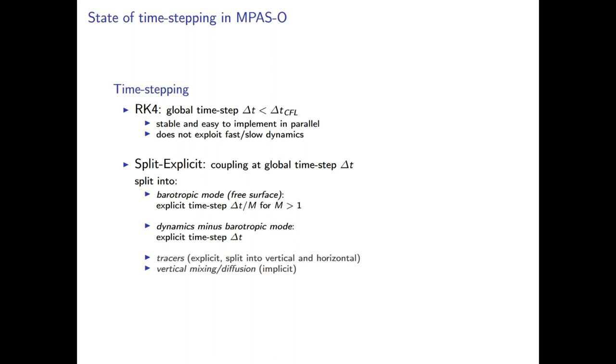And the main workhorse is a split explicit scheme which takes time steps which are much bigger than this CFL for RK4. And it achieves that by splitting the core dynamics into barotropic mode and the remainder which consists of the baroclinic modes and the advection. So this can be solved with a big time step. And then for the barotropic modes, you have to use sub-cycles. And then there is also tracers and vertical mixing, which I'm not going to talk about, but we are going to see this addressed in a talk by Sarah later.